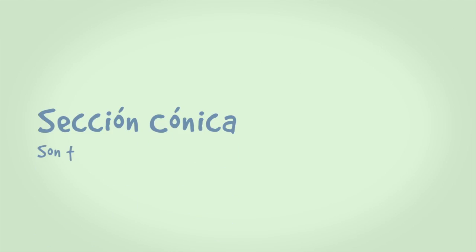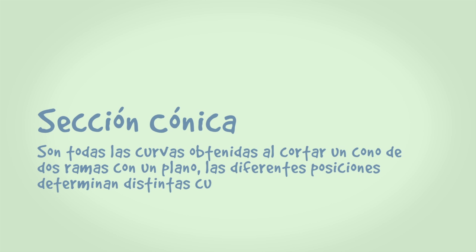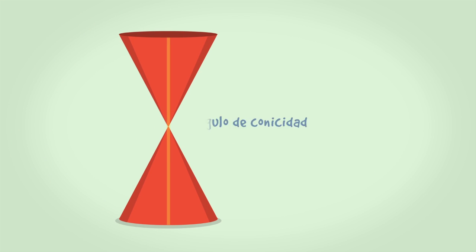Llamamos sección cónica a todas las curvas obtenidas al cortar un cono de dos ramas con un plano. Las diferentes posiciones determinan distintas curvas. Sea alfa el ángulo de conicidad, es decir, el ángulo que existe entre una recta generatriz del cono y el eje del mismo.